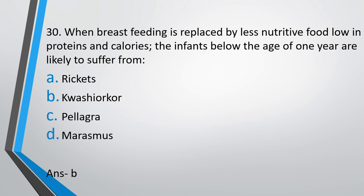Remember guys, protein energy malnutrition is of two types: kwashiorkor and marasmus. You need to remember under which age it is called kwashiorkor and above which age it is called marasmus.